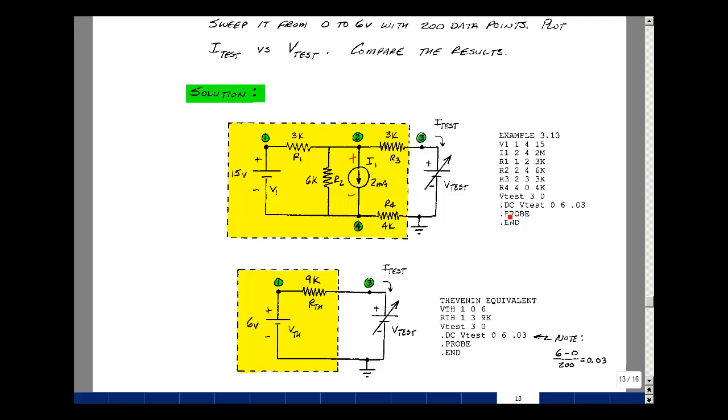Then the DC sweep command begins with .DC, and then you give the name of the voltage or current source you want to vary. In this case, I'm going to vary VTEST. Now I vary it from zero to six volts.